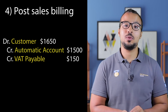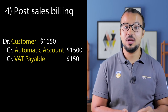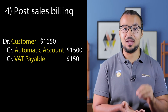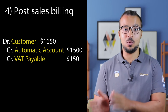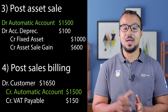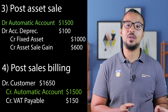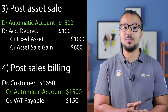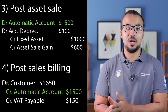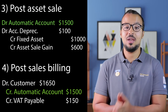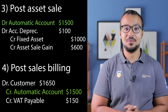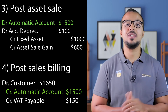Instead of posting to the revenue account, we change the configuration so that SAP posts to the automatic offsetting account — the same one used in the fixed asset sale posting in the fixed asset module. This way, the automatic offsetting account has a debit in the fixed asset posting and a credit in the sales billing posting with the same value, so the net balance is zero. The net accounting impact is: debit to the customer account, debit to accumulated depreciation, credit to fixed asset acquisition cost, credit to fixed asset sales gain, and in case of sales taxes, a credit to the sales tax account.